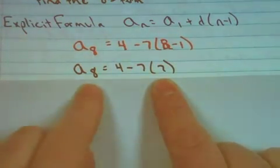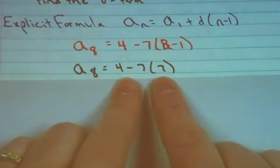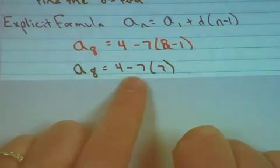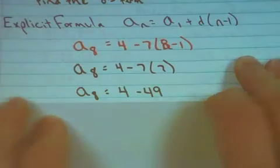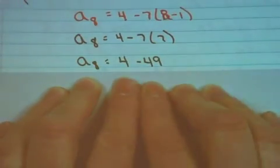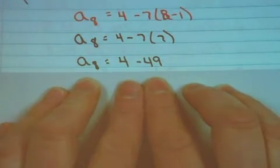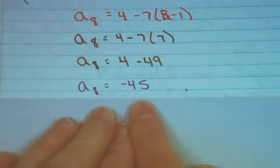So a sub 8, or the 8th term, will be equal to 4 minus 7 times 7. Now order of operations. Should I subtract first or multiply first? That's right, we need to multiply first. So the 8th term will be equal to 4 minus 49. The 8th term in this list is negative 45.